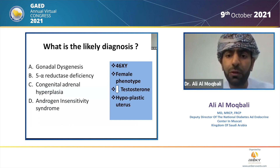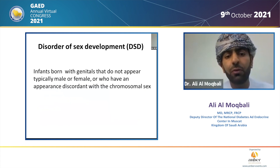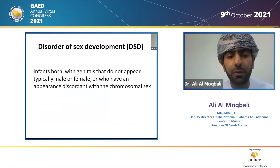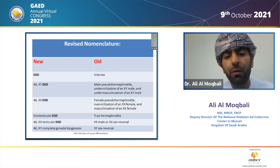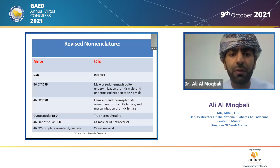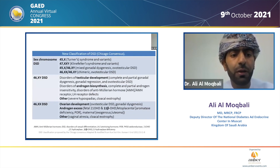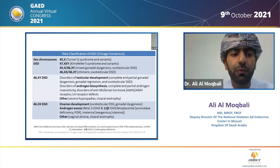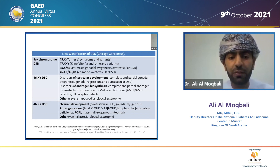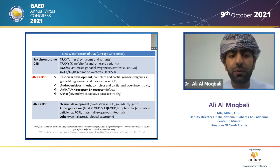To answer this question, we need to know a little about disorder of sex development, a term given to infants born with genitals that do not appear typically male or female, or who have an appearance discordant with chromosomal sex. Old names like intersex and pseudohermaphrodite have been replaced by this newer term. Disorders of sex development are classified into three major categories: sex chromosome DSD, 46XY DSD, and 46XX DSD. Our patient has 46XY DSD.